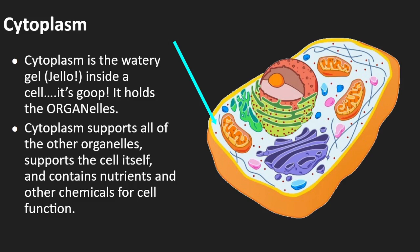Cytoplasm is pretty much everywhere and it's used for the same thing everywhere — stuff floats in it for support, and it can dissolve things. This is one of the main reasons we have to drink so much water: to maintain the structure of this cytoplasm, because every cell in your body has it. In this particular picture, the cytoplasm would be all this white area right here — the line is not pointing to any particular structure.